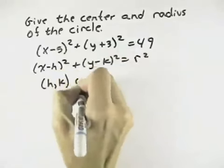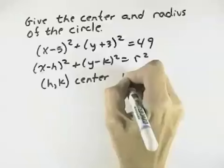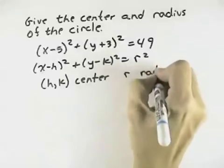where h k is the center we're looking for, and r is the radius we're looking for.